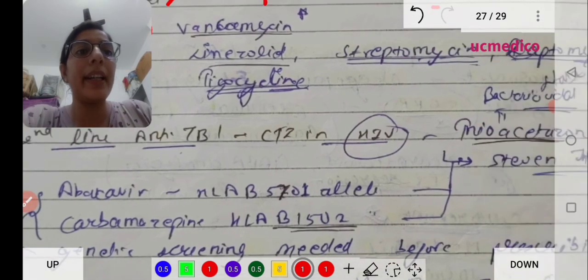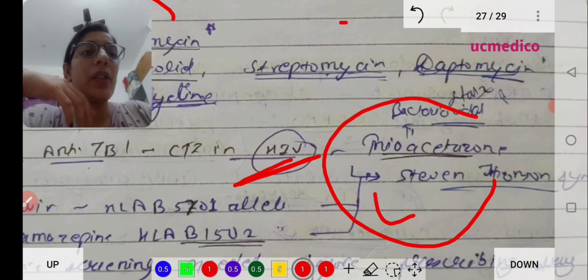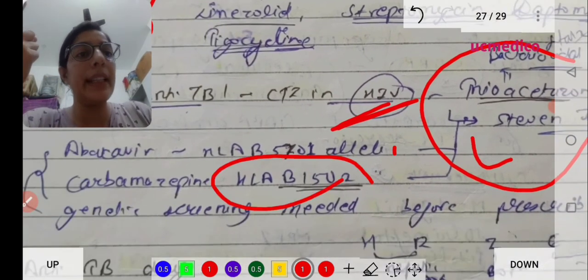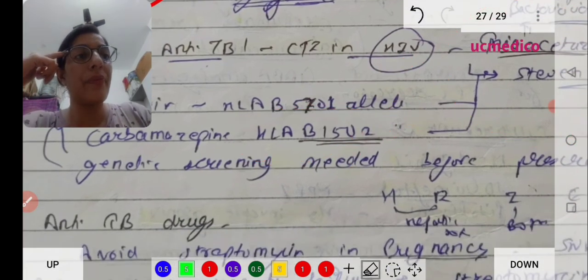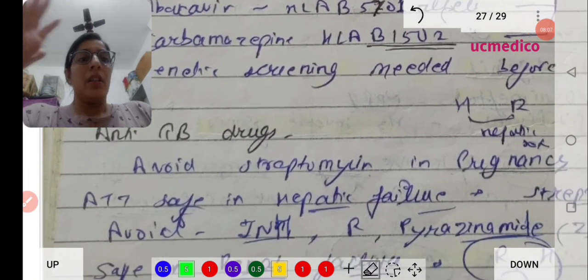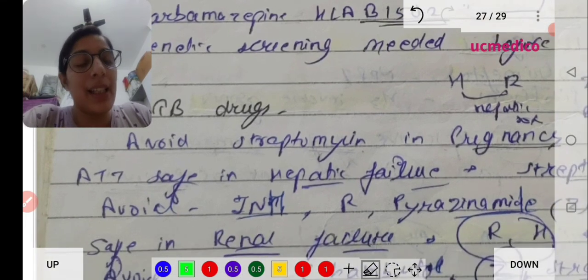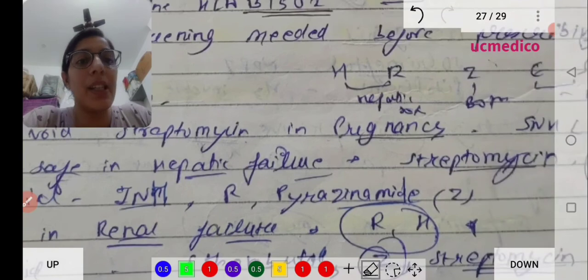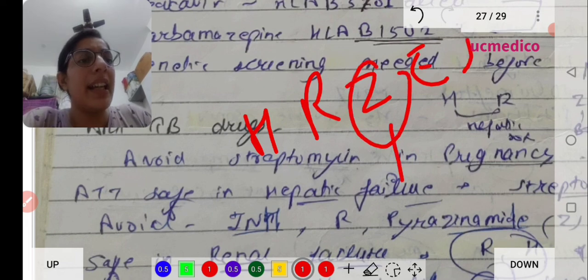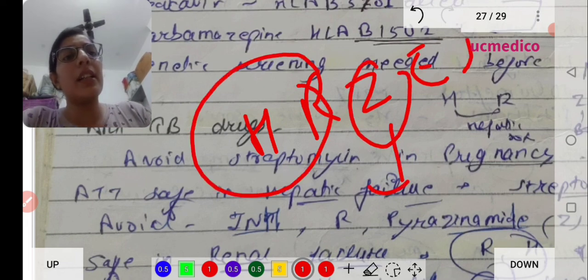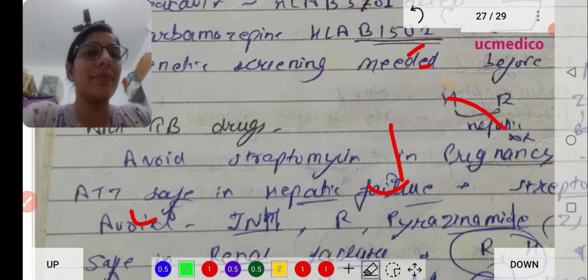Anti-tuberculosis drugs - contraindicated in HIV is thiacetazone, which causes Stevens-Johnson syndrome. We already seen HLA-B*1502 genetic variant. Streptomycin in pregnancy - ATT is safe in hepatic failure. Remember HRZES: RZE are both renal toxic and hepatotoxic. HE are hepatotoxic. S is renal toxic.